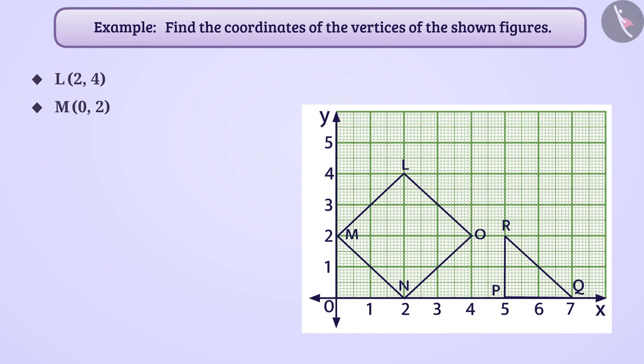The x coordinate of vertex N is 2 and the y coordinate is 0. Hence, the coordinates of the vertex N are 2, 0. Similarly, the coordinates of vertex O are 4, 2.